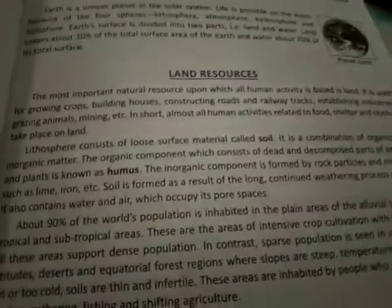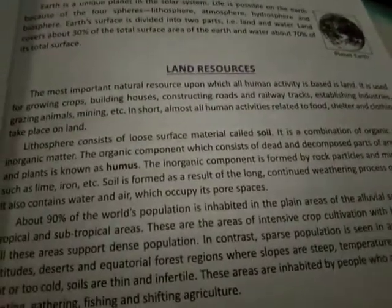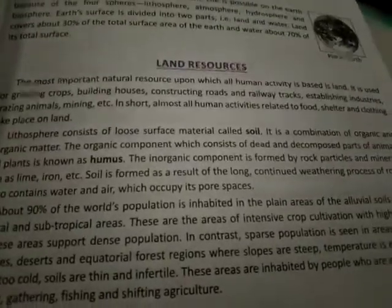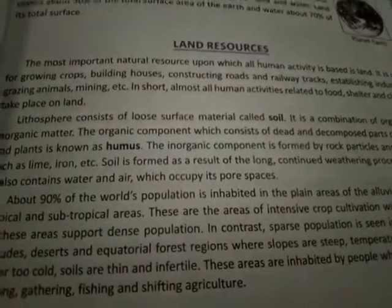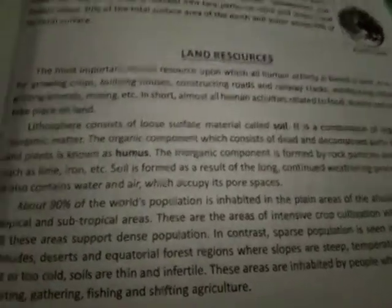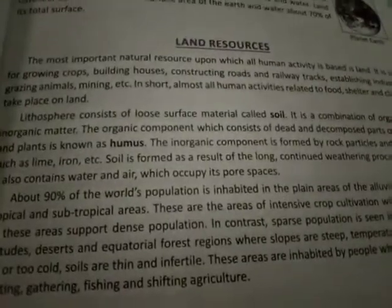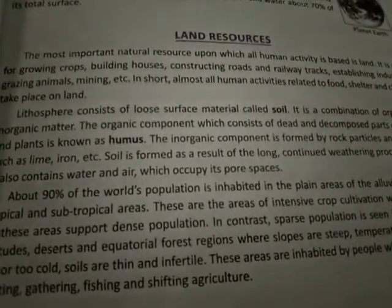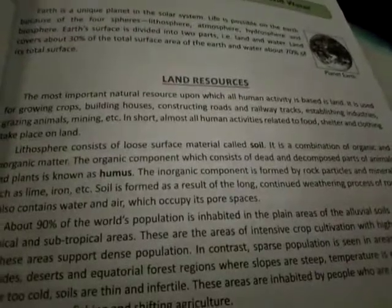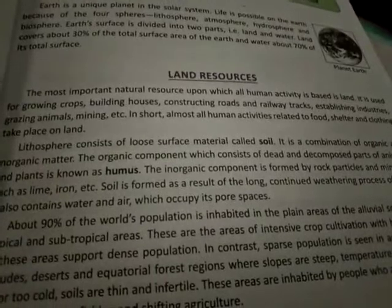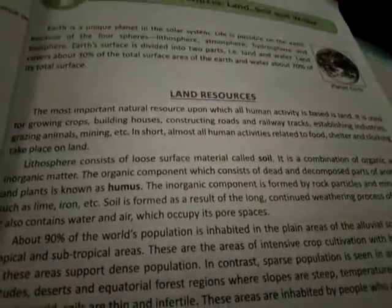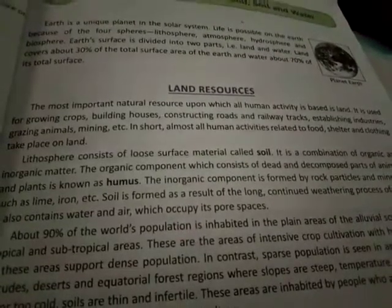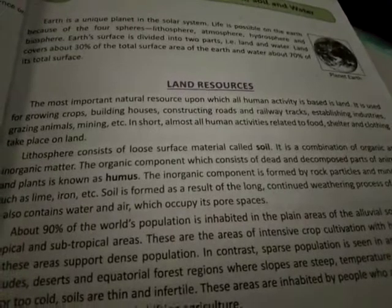The most important natural resource upon which all human activity is based is land. All our activities are on the land surface — our homes are on land, plants grow, trees grow, our crops grow on land. Land is used for growing crops, building houses, constructing roads and railway tracks, establishing industries, grazing animals, mining, and so on.